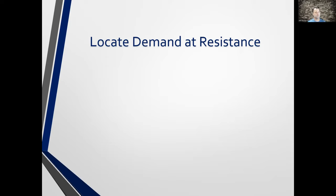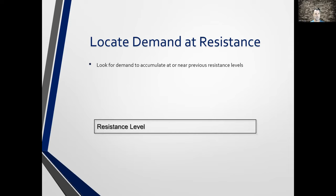Demand — we want to locate demand at resistance. If you remember the previous slides about sellers causing demand, we need something to know that we have demand. We're going to look for demand to accumulate at or near previous resistance levels. Sometimes people refer to them as supply levels — ultimately it's a level. If you don't know, just put the PFA zone suite on your chart and they will be denoted there for you.